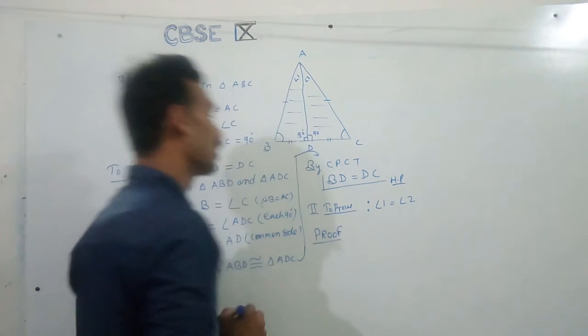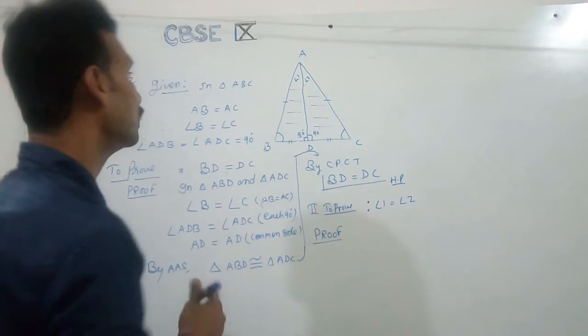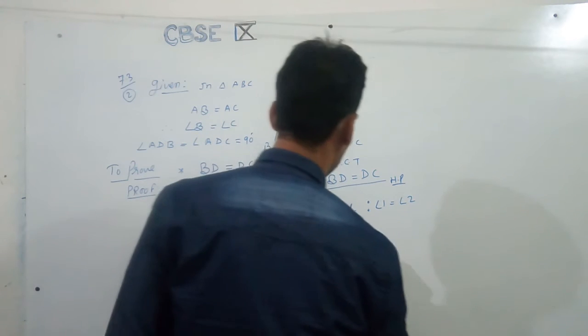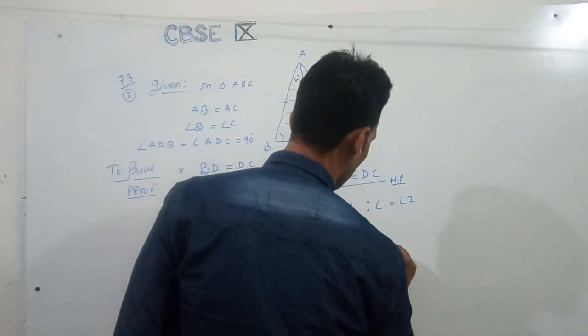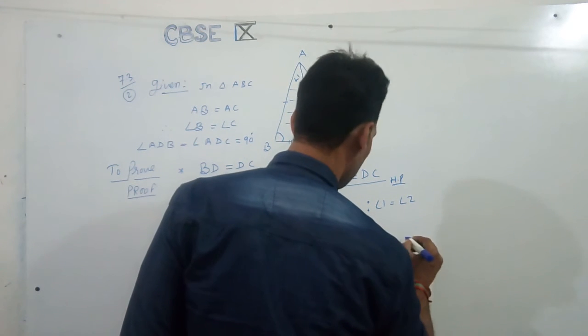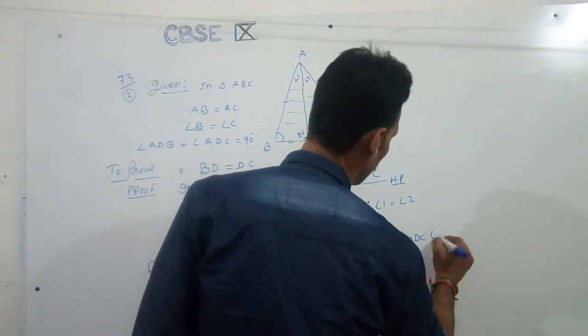Proof. How to prove? So proof. How to prove? Triangle ABD congruent triangle ADC, proved, right?